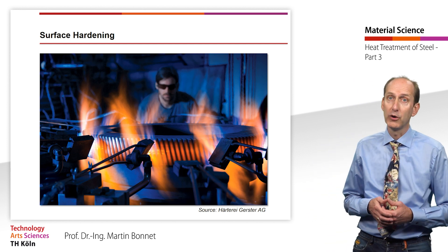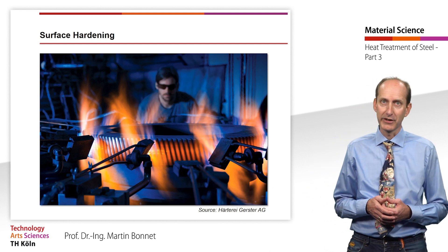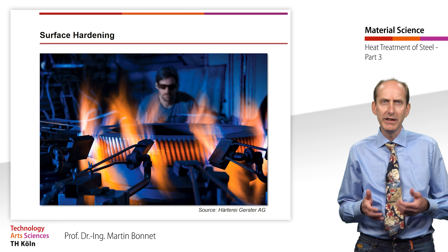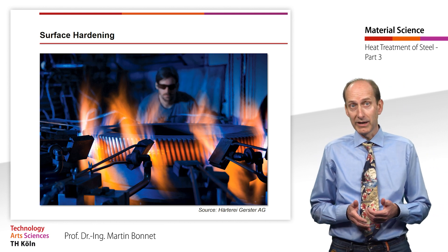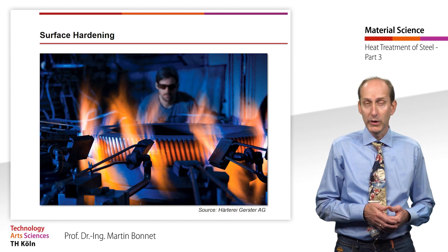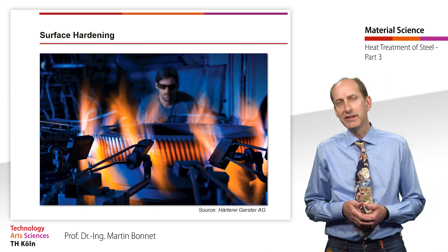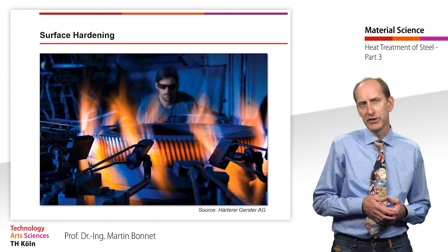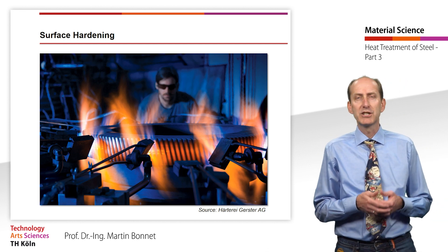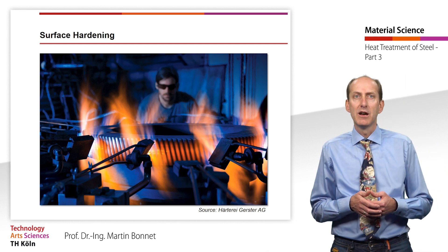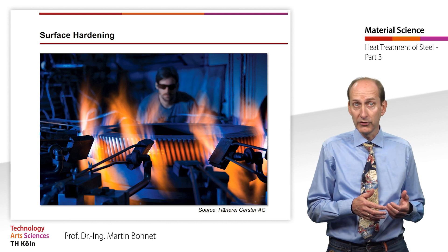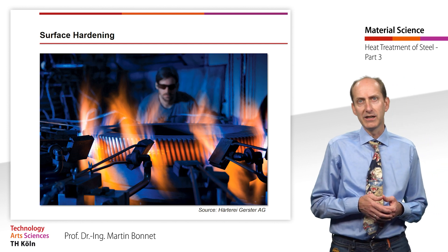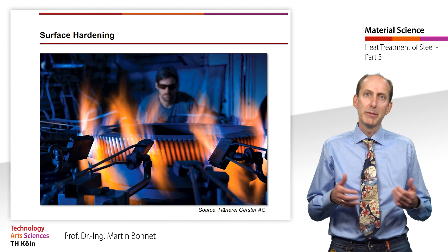We have already learned about one method in the videos on time-temperature transition diagrams, more specifically as we talked about the Jominy test. During this test, the complete workpiece is heated to the austenizing temperature with subsequent quenching. We have learned that in the case of unalloyed steel only a thin surface layer is hardened. However, the technical significance of this process is low. Much more frequently, surface hardening is done by heating a layer close to the surface to the austenizing temperature with subsequent quenching. The change in the material condition of the surface layer is achieved without changing the chemical composition of the steel.